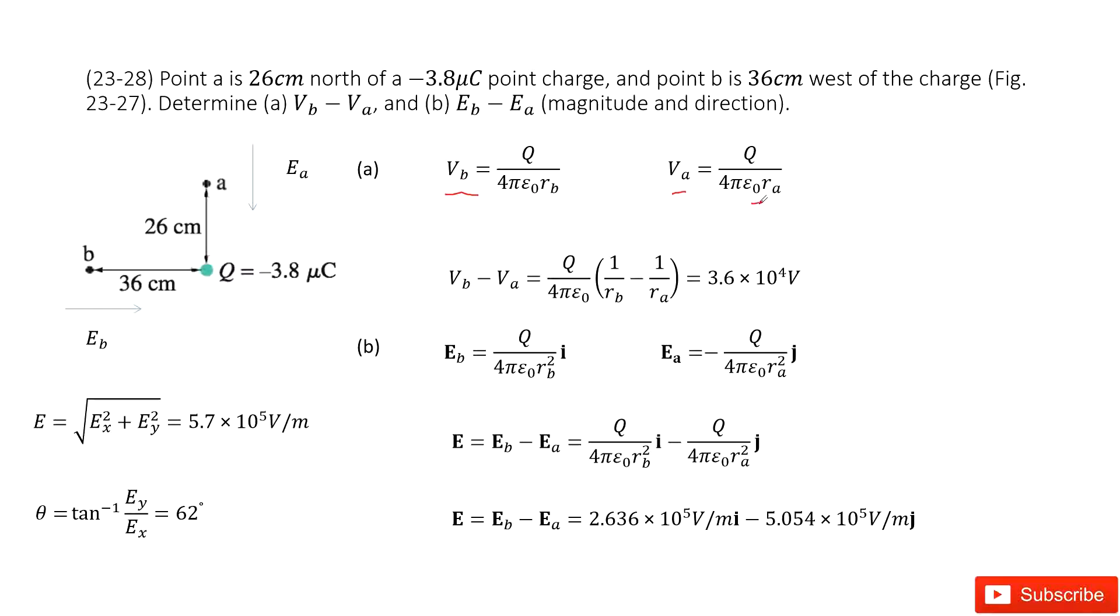As we know, electric potential is a scalar. So if you want to find the difference VB over VA, you just input VB, VA, the magnitude inside. Input the known quantities and you get the answer there.